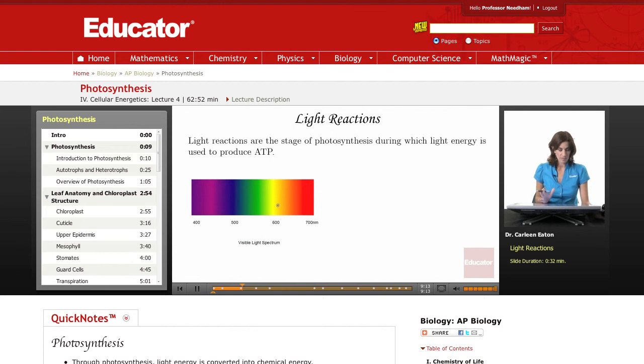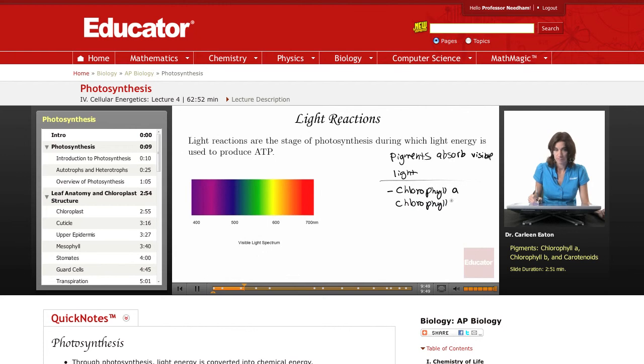To understand the light reactions, you need to understand a little bit about light and pigments. Pigments are substances that absorb visible light. There are several pigments that we'll talk about with photosynthesis. For example, chlorophyll A, which participates in the light reactions. Also chlorophyll B. And another group of pigments called the carotenoids. These are actually considered the accessory photosynthetic pigments. We'll talk more about the functions of each of these.